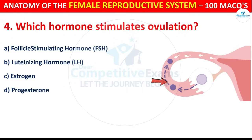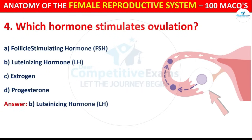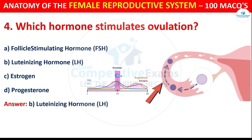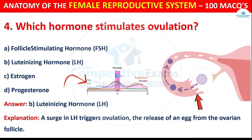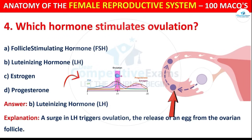The correct answer is B, i.e. Luteinizing Hormone (LH). A surge in LH triggers ovulation — the release of an egg from the ovarian follicle.